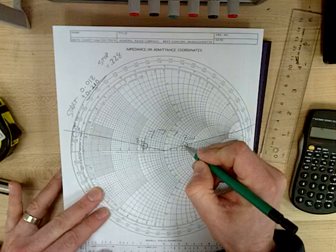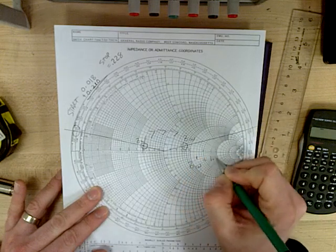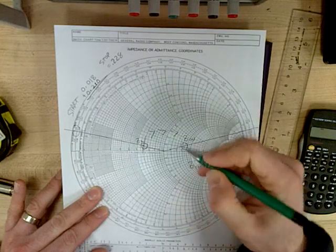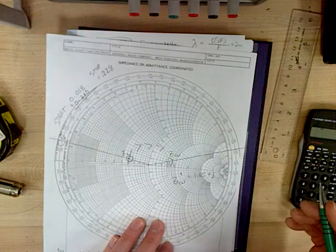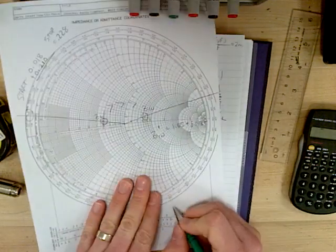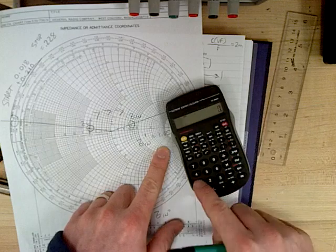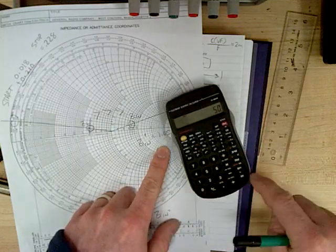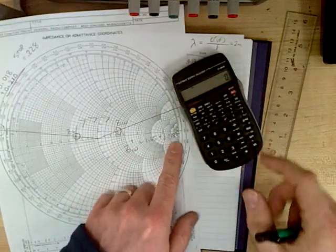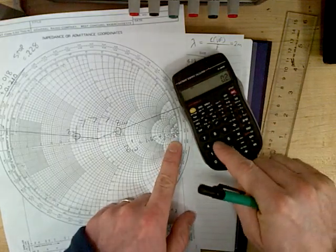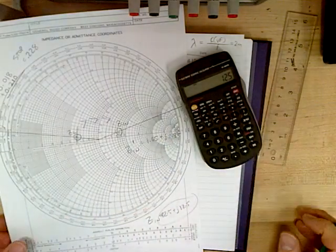So now I look here. This happens to be, that's about, Z in normalized would be 1.65 plus J 0.25. So that means Z in, I just take that and multiply it by 50. 1.65 times 50, 82.5 plus J, 0.25 times 50, 12.5. 82.5 plus J 12.5.